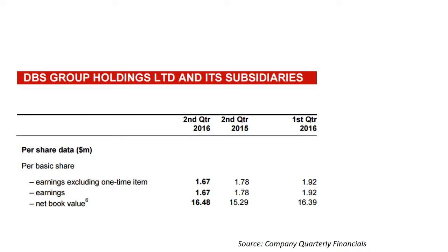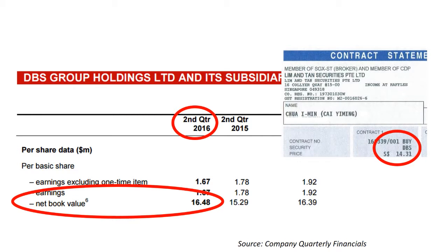Let's use DBS as an example. As you can see, the book value is $16.48 in second quarter 2016, and the price which I bought at that point in time is $14.31. A price to book value of 0.87 times, which is obviously less than one, and deemed as cheap.